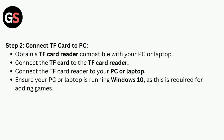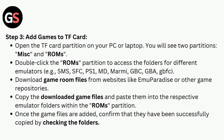Step 3: Add games to the TF card. Open the TF card partition on your PC or laptop. You will see two partitions: MISC and ROMS. Double-click the ROMS partition to access the folders for different emulators. Download game ROM files from websites like Emu Paradise or other game repositories, then copy and paste them into the respective emulator folders within the ROMS partition.